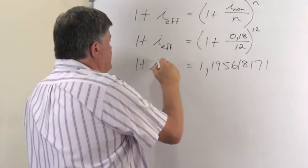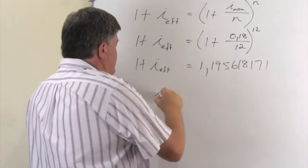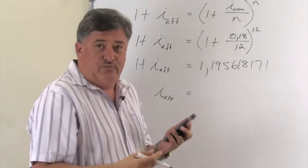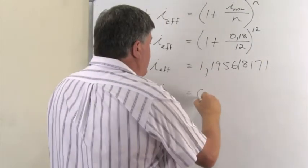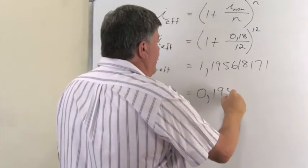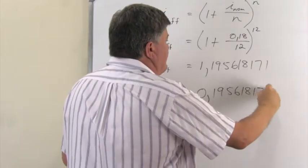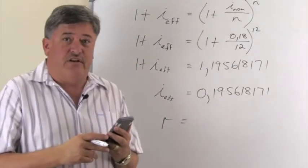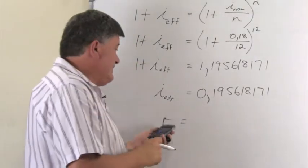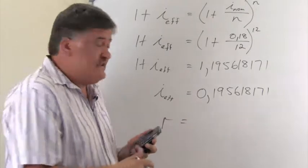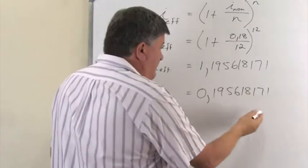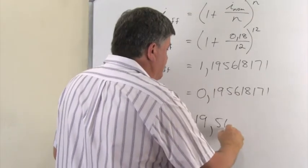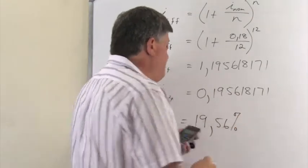And this is my 1 plus i effective. So to find my effective interest rate, I'm now going to subtract both sides by 1. So you will agree we will get 0.195618171. If we want now the rate in terms of a percentage, and that is now our effective rate, our yearly rate. We will multiply by 100 and we will get 19, if I round it off to two decimals, 5.6%.